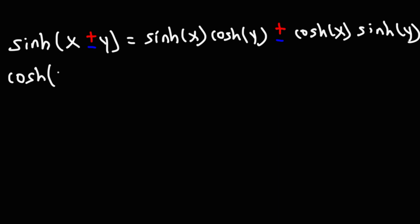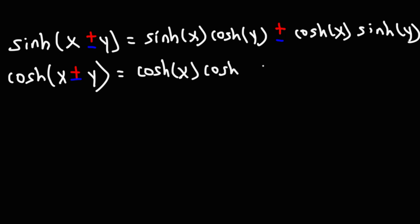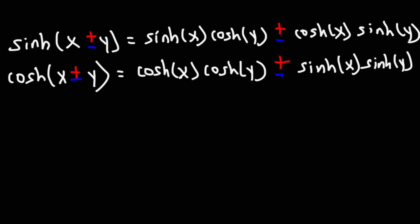For hyperbolic cosine of x plus or minus y, there are some similarities but a few differences. Instead of sine-cosine products, it uses cosine-cosine: hyperbolic cosine of x times hyperbolic cosine of y, and the signs are not inverted — they remain the same. Then we add hyperbolic sine of x times hyperbolic sine of y. Those are the sum and difference formulas for hyperbolic functions.